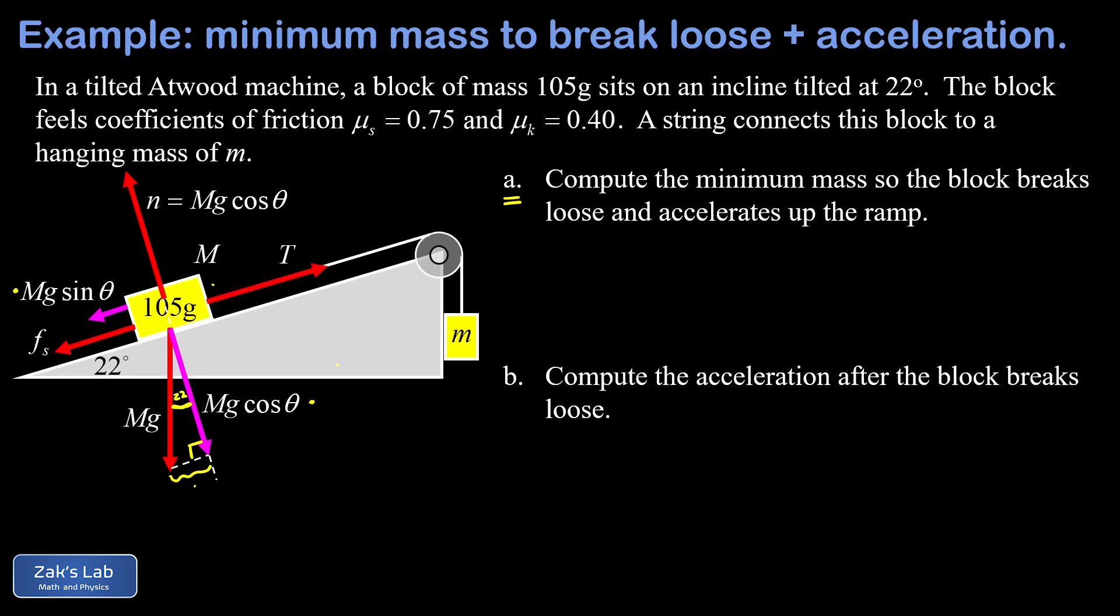So there's the tension just pulling in the direction of the string. Next, we need to get into the force analysis on the hanging mass little m, and that one's really quick. I just have the weight of that guy, that's little mg pulling straight down, and then the tension in the string T pulling straight up.